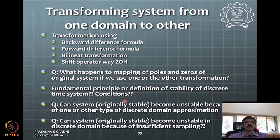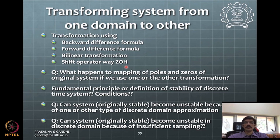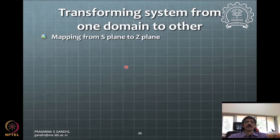Once we have a system in the s-domain, we are able to transfer it into the discrete domain using these different transformations. This is the main crux. Once this transformation is available, it is easy to implement in a microcontroller. We are talking about mapping from the s-plane to the z-plane: z = e^(sT), which is the mapping from s to z.